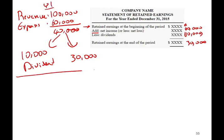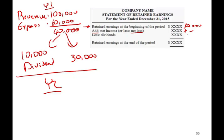This is year one. Now when we start year two, the beginning retained earnings becomes $30,000 — remember the ending was $30,000. In year two, the beginning becomes $30,000. Then we add net income, or if we incur a net loss we subtract it, we subtract dividends, and then we have ending retained earnings. And ending retained earnings becomes the next year's beginning retained earnings.